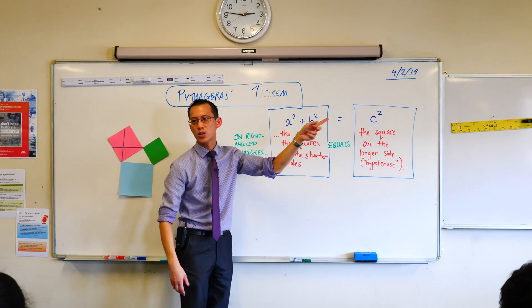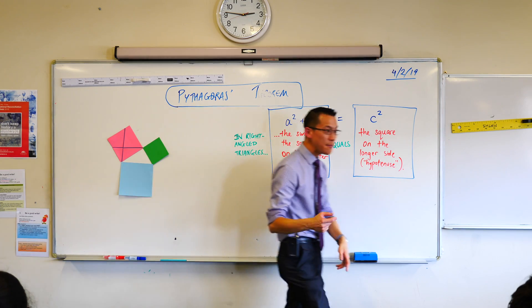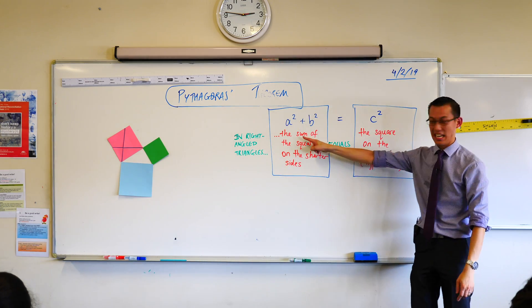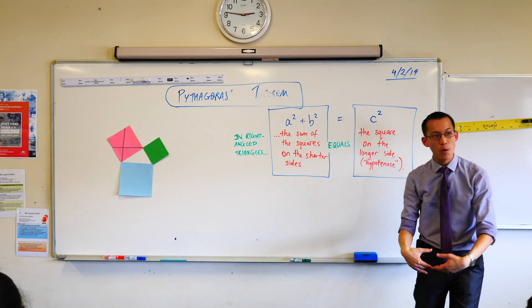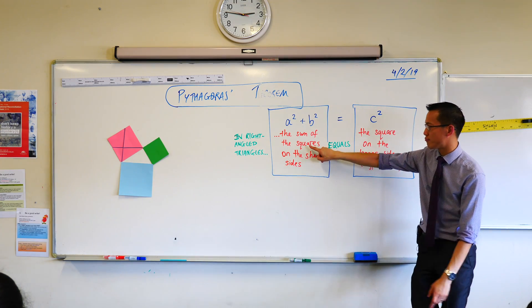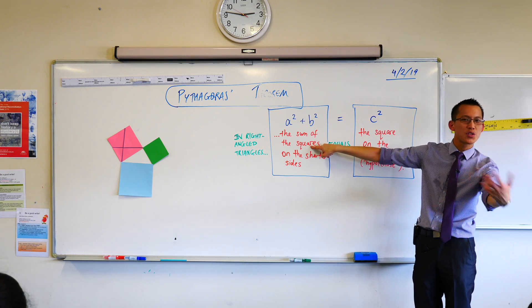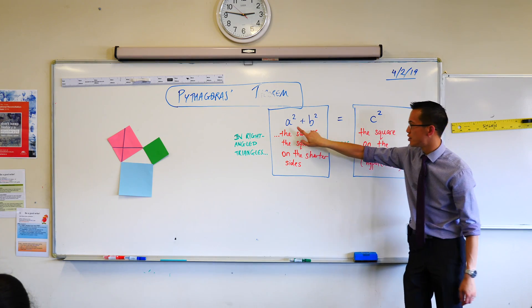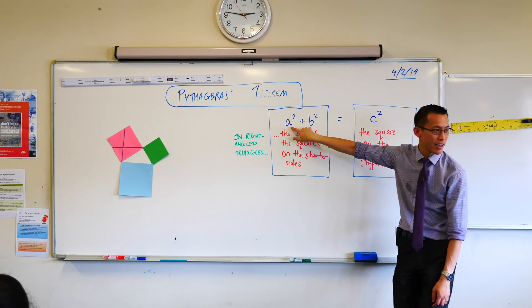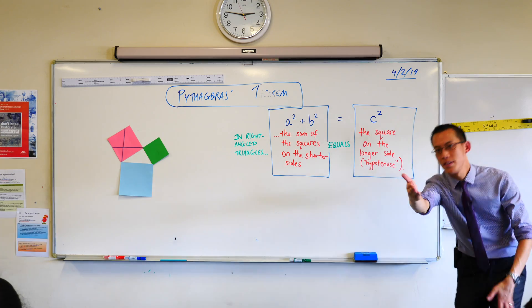What does A squared plus B squared mean? It means we're adding up two things. It's a sum. And what are we adding up? We're adding up two squares. Which squares are we adding? Do you remember why we named A and B? Why do we name them first?